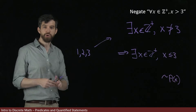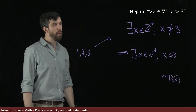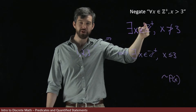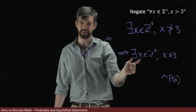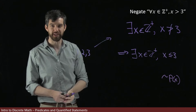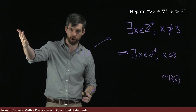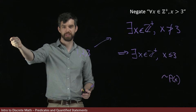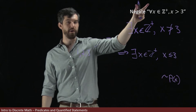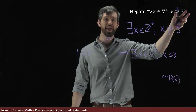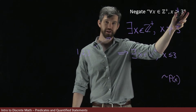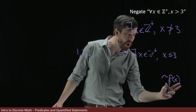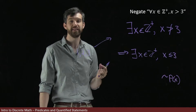Notice what's happened — two different things. First, I began with a for-all symbol, and when I did the negation, it turned into a there-exists. This should make sense: if it is not the case that everything is true, there must be something where it's false. The for-all changes into there-exists. The second part is that x greater than 3 — that's just some predicate P(x) — switched to not P(x), in other words x less than or equal to 3 in this case.